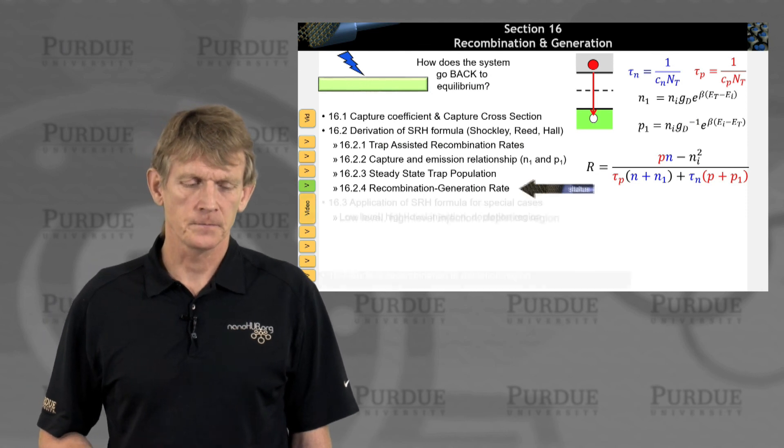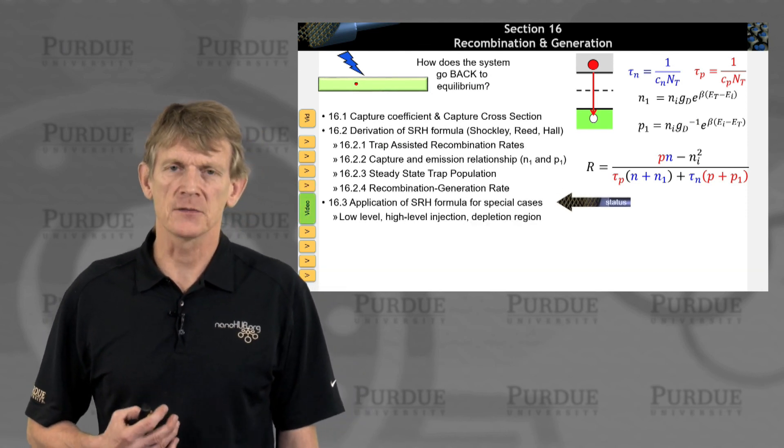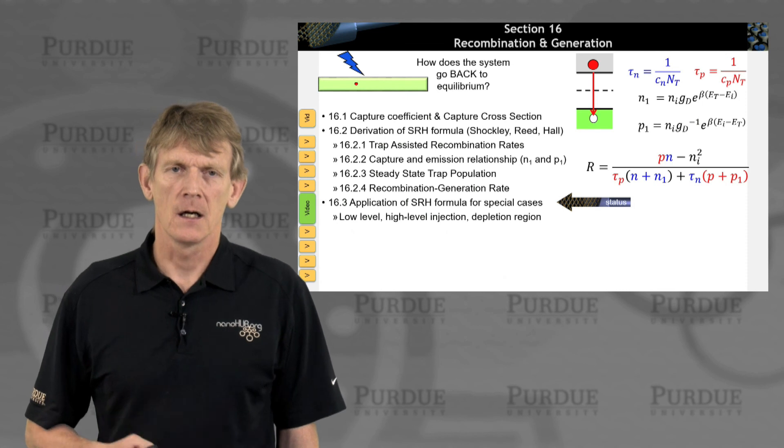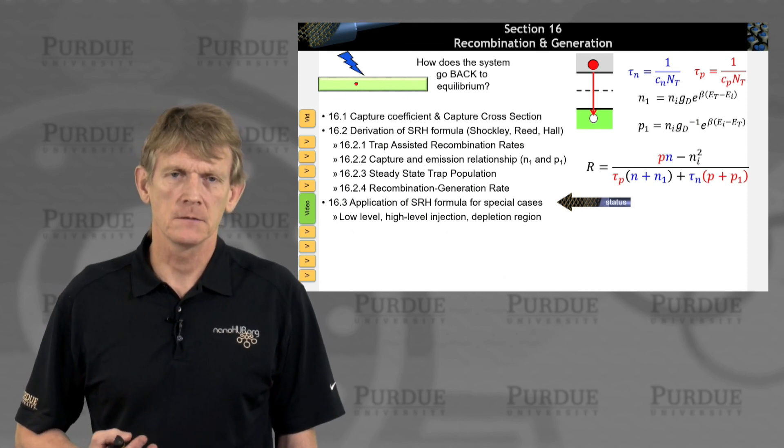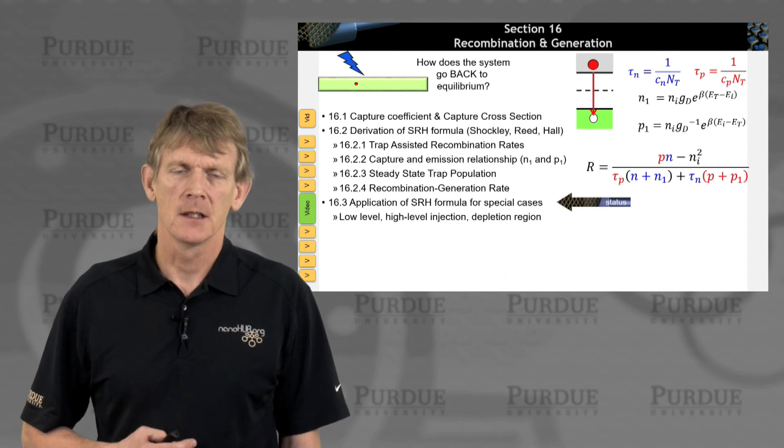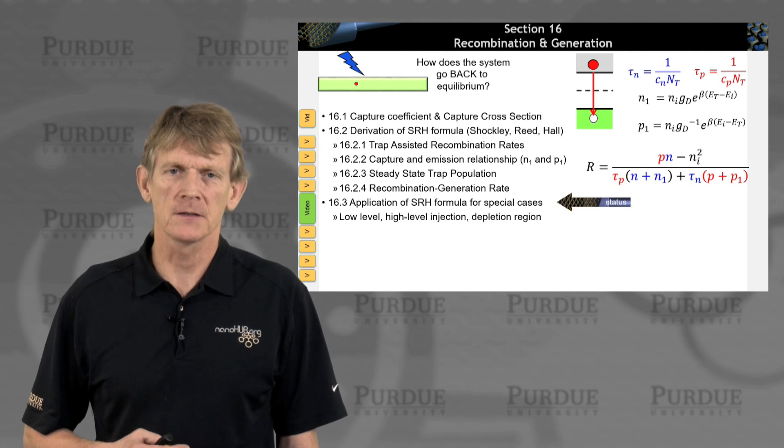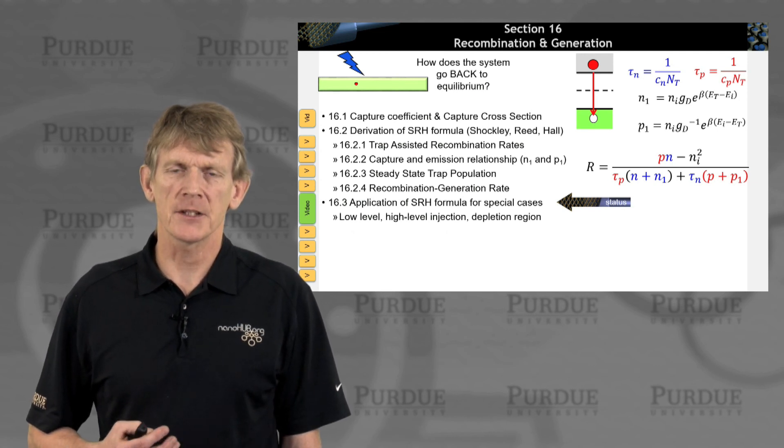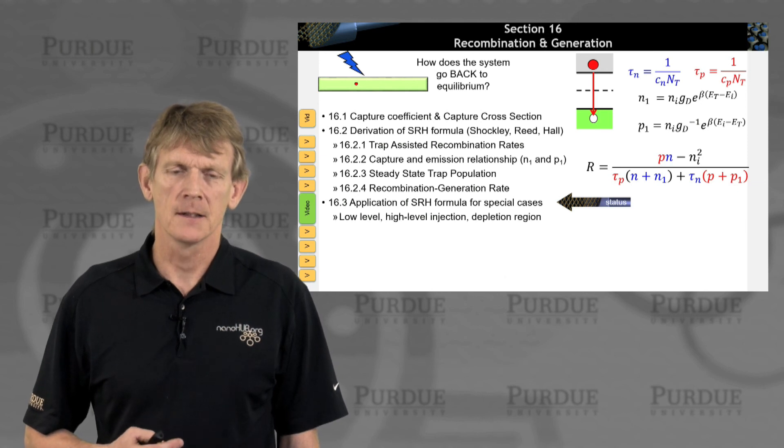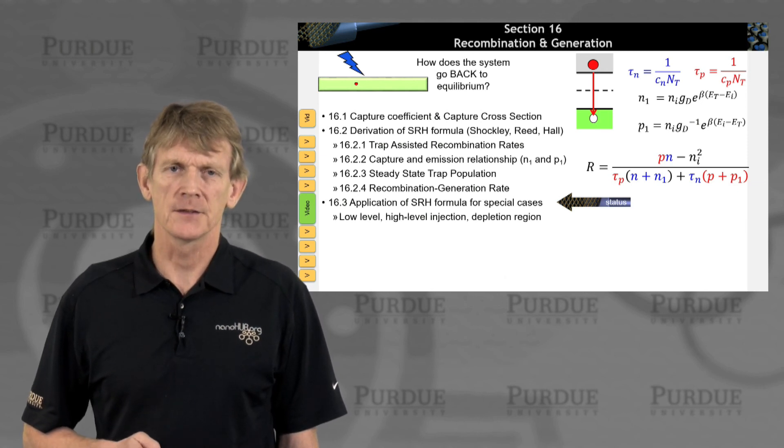Okay? So in the next section, then, we will apply these expressions to a couple of very normal cases that happen in semiconductor devices. And we'll have expressions for R in terms of tau N and tau P. So I'll see you in the next section.